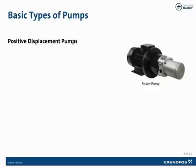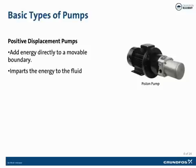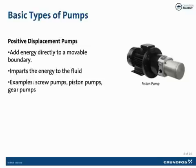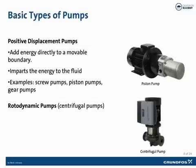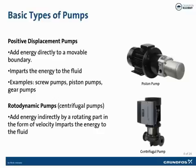There are two basic types of pumps. Positive displacement pumps, also known as PD pumps, add energy directly to a movable boundary to impart energy to the fluid. Examples of PD pumps are screw pumps, piston pumps, or gear pumps. The second type are rotodynamic pumps, commonly known as centrifugal pumps or CPs. They add energy indirectly by a rotating part in the form of velocity, then converting that velocity to pressure. Centrifugal pumps are the workhorse device in HVAC systems, and we'll concentrate on them for this training module.